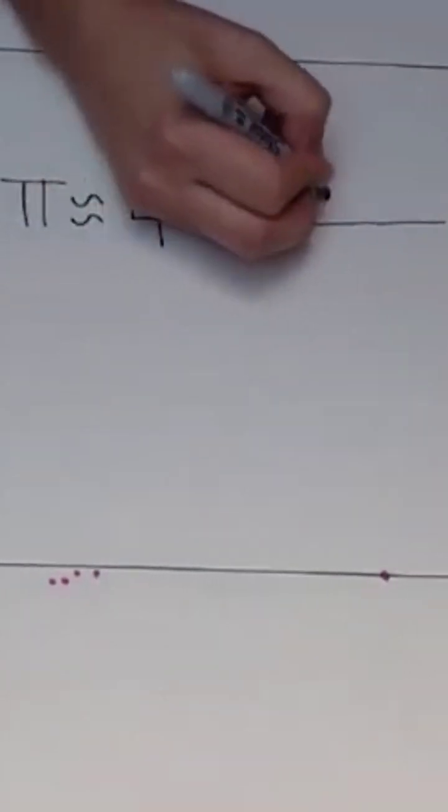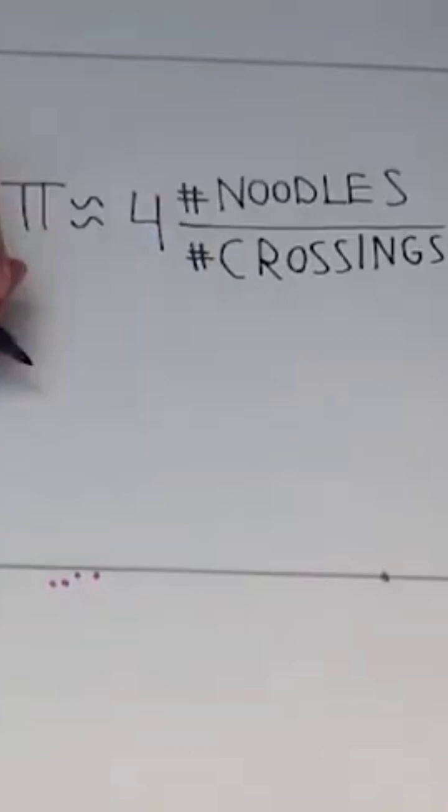Finally, the formula to estimate pi is this: Pi is approximately four times the number of noodles divided by the number of crossings.